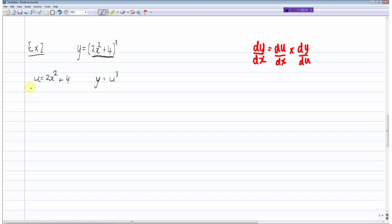Again, we will differentiate first of all with respect to x, the term here. And so this is equal to 4x and then dy/du is equal to 3u squared. Multiply those two terms together, these two together, we get 4x multiplied by 3u squared.